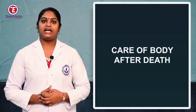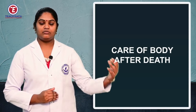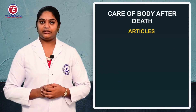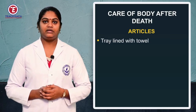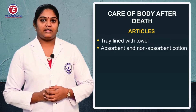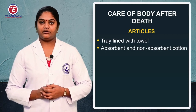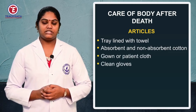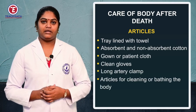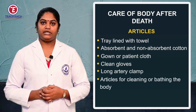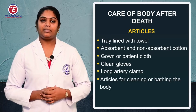Before starting the procedure, arrange the necessary articles. These include a tray lined with a towel, gauze pieces, absorbent and non-absorbent cottons, gowns, sterile gloves, an artery clamp, and all articles needed for cleaning or bathing the patient.